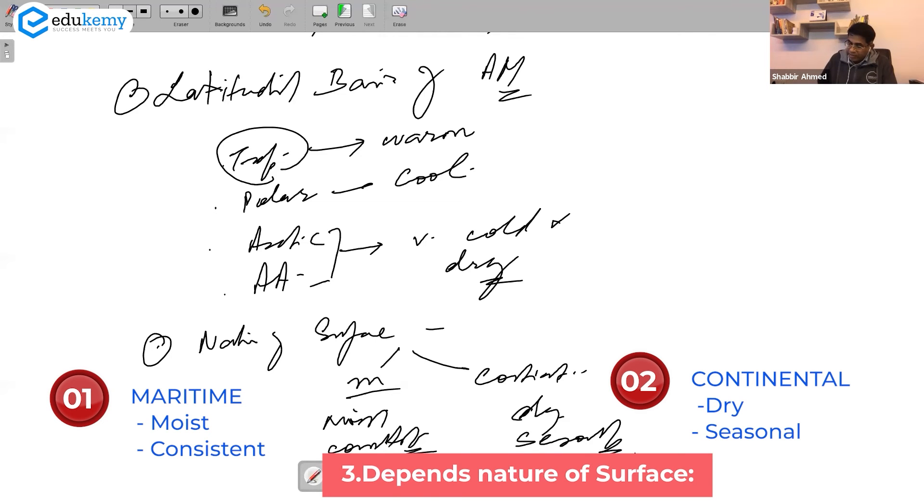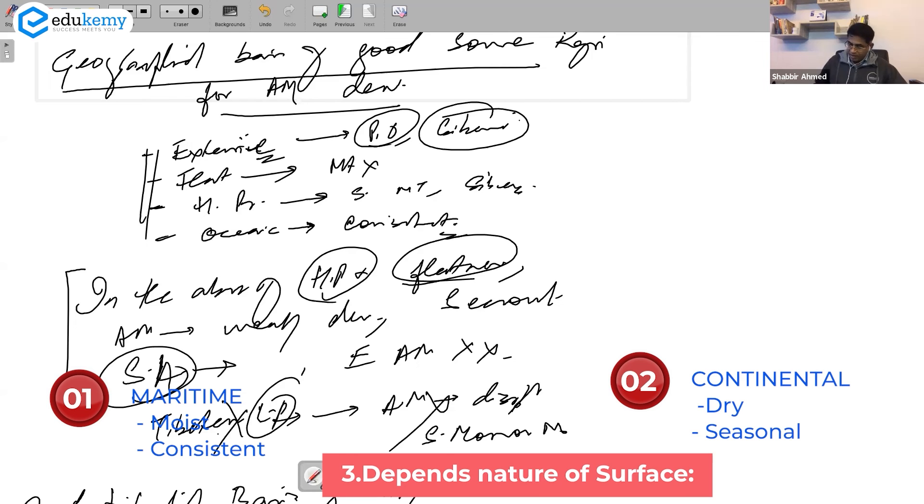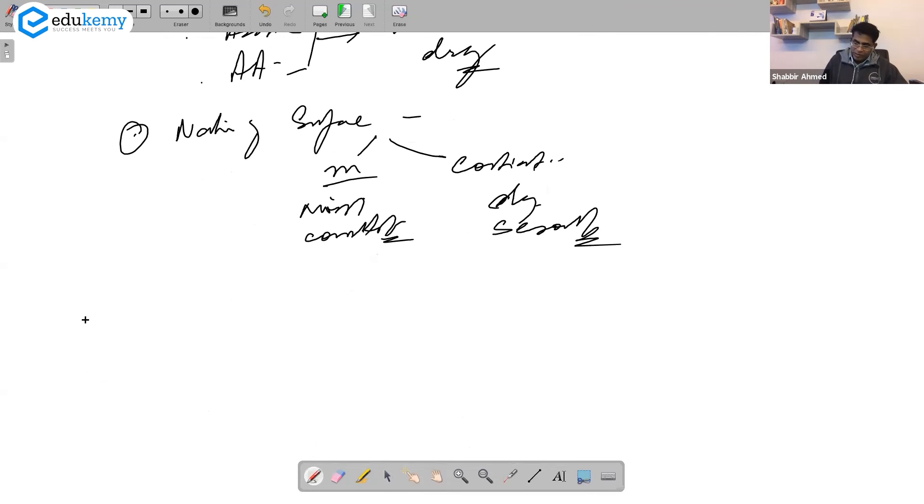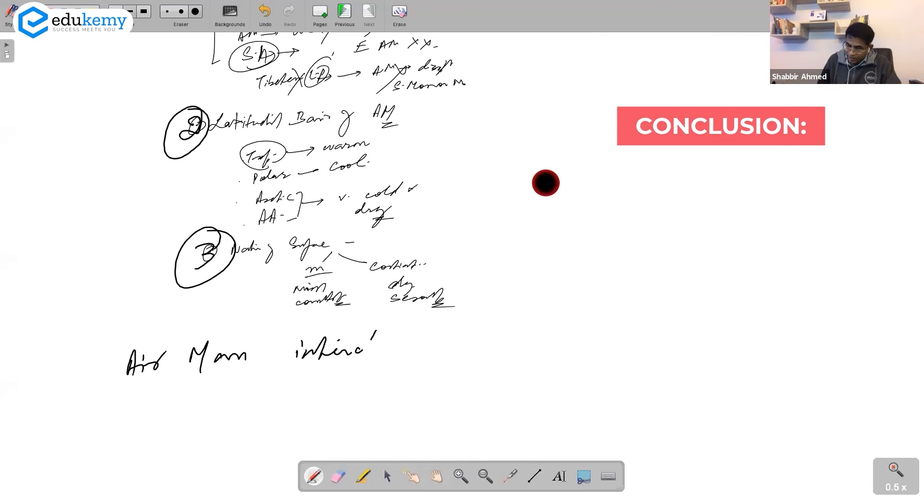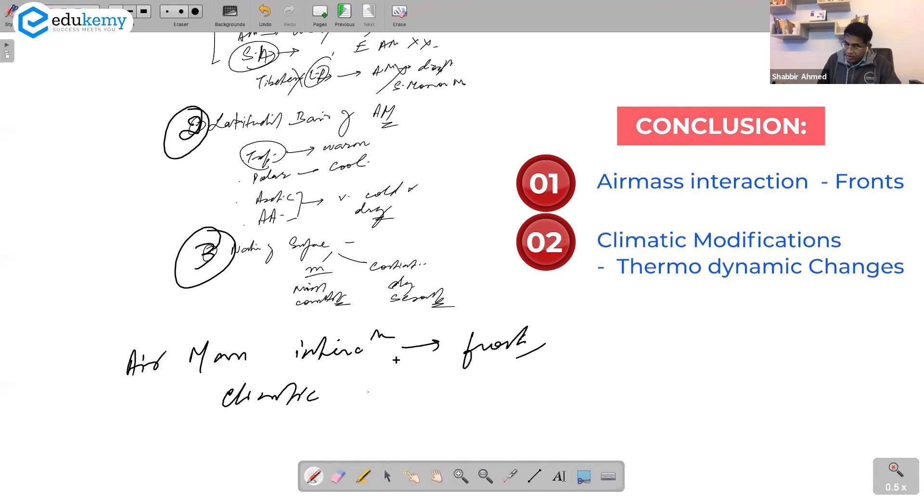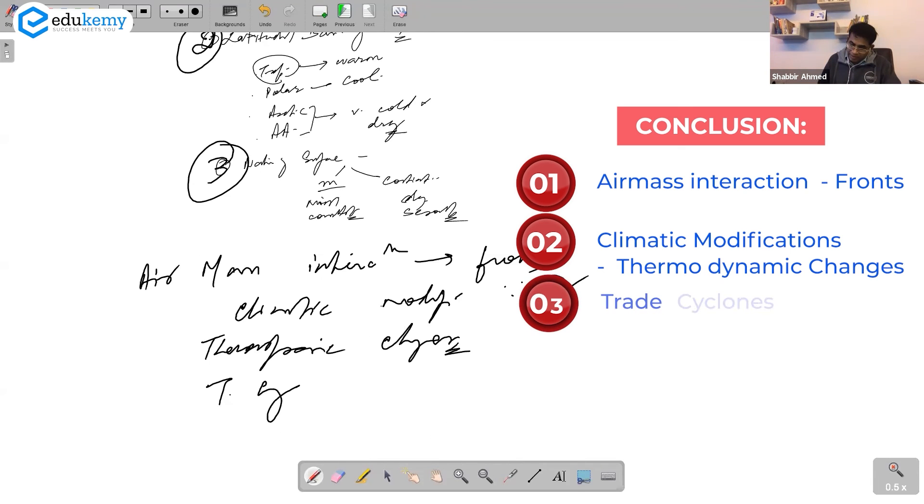And the conclusion you can always mention air mass interaction - fronts, climatic modification because of thermo-dynamic changes, temperate cyclones. So is ke saath may go towards the conclusion in terms of interactions.